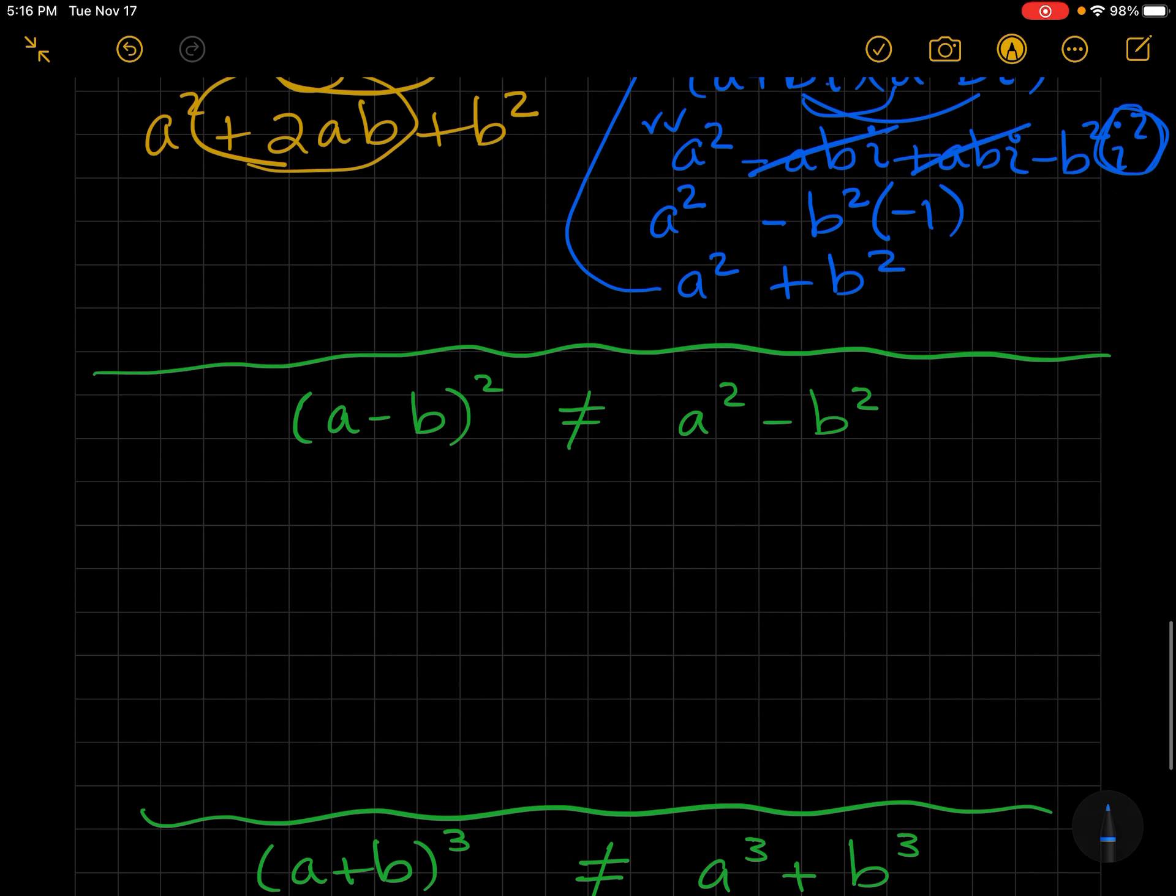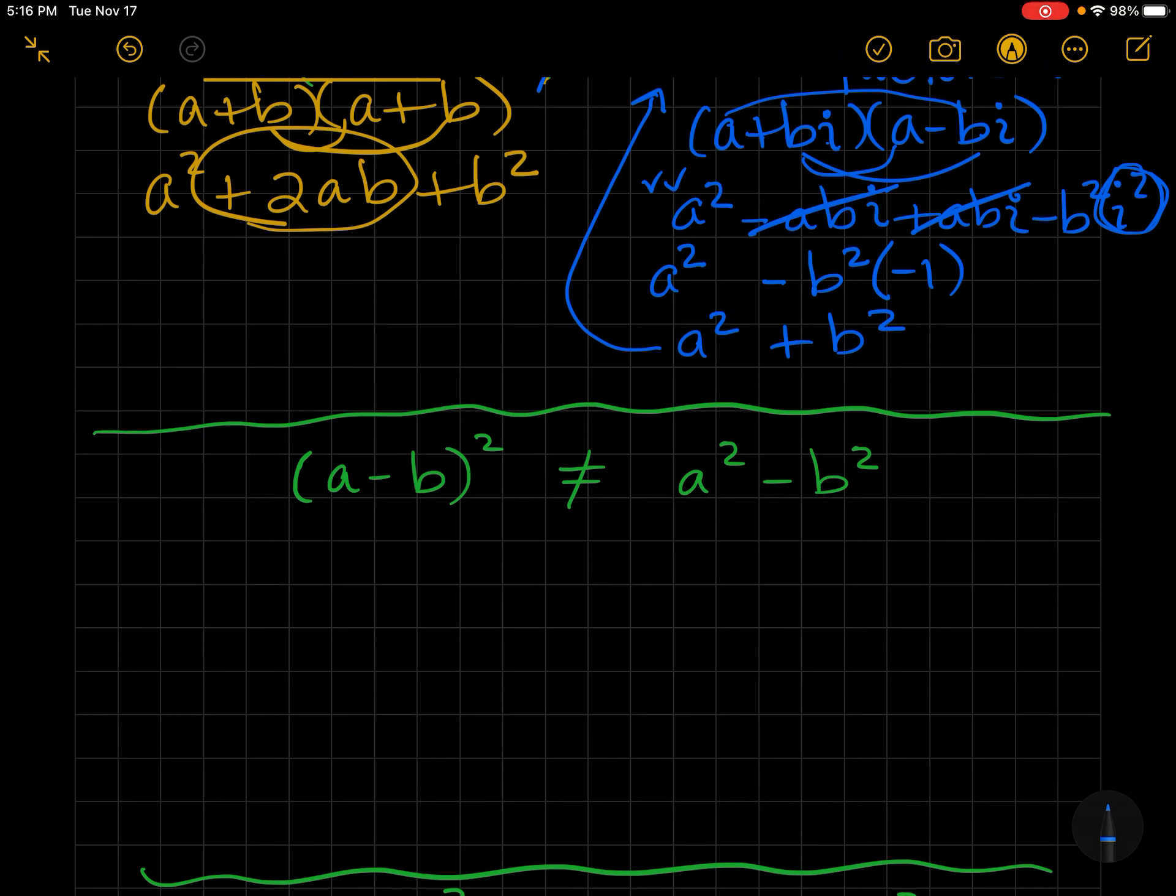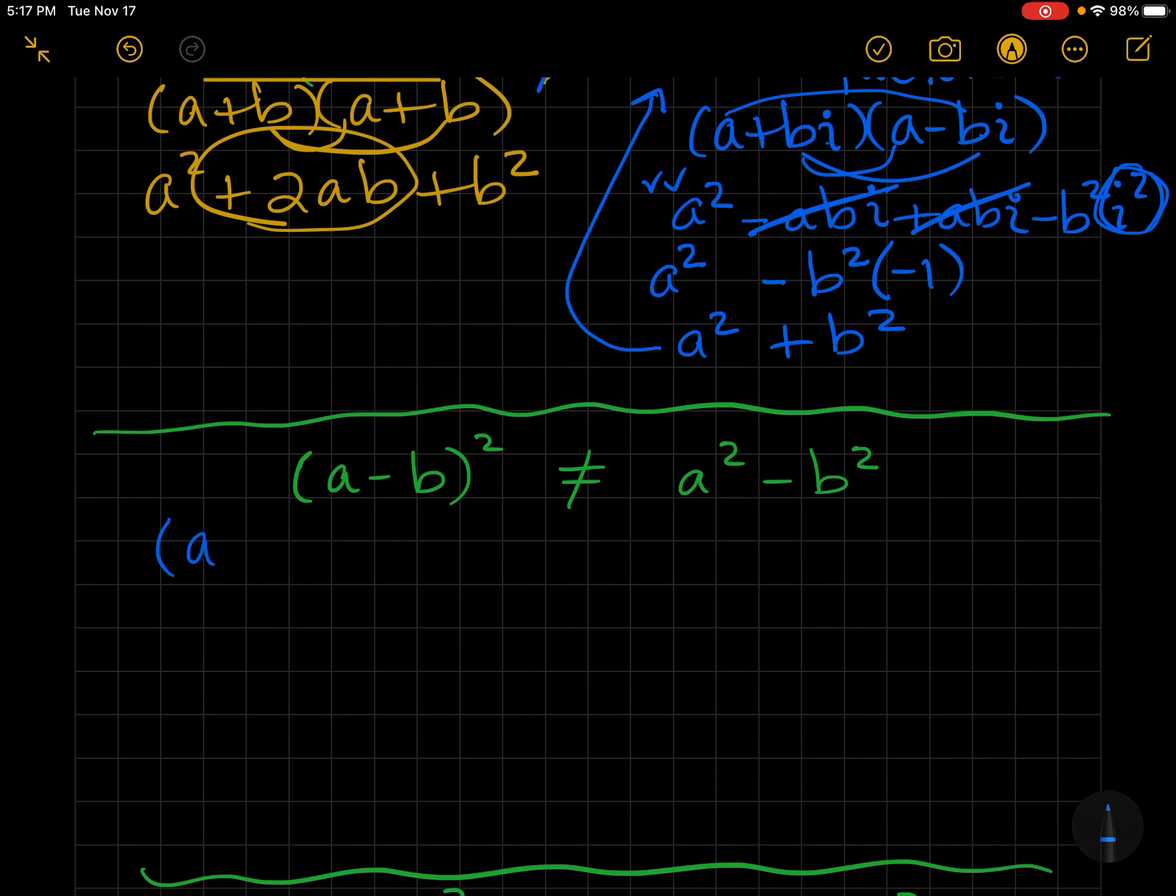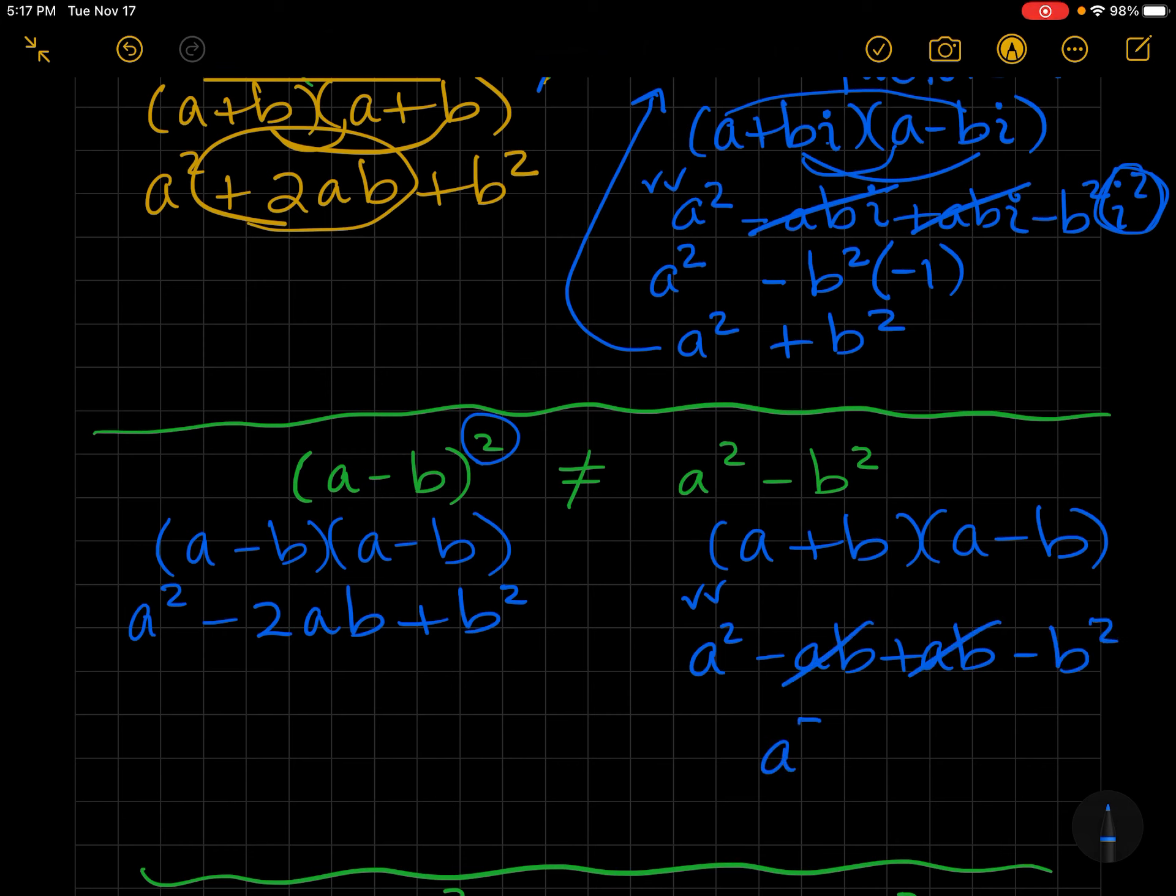Another common error is to think that these two are equivalent. You cannot distribute. This side is a - b times a - b. Remember, when it's squared, that means you do it twice. And if we were to multiply this out, we'd get that. And we already know how to factor the difference of two squares is a + b, a - b. And if we were to multiply this out and double check it, we would see a² for first. Outer would be a - ab. Inner is a + ab. And last is b². So we can clearly see that it does double check. And we can see those are equivalent.